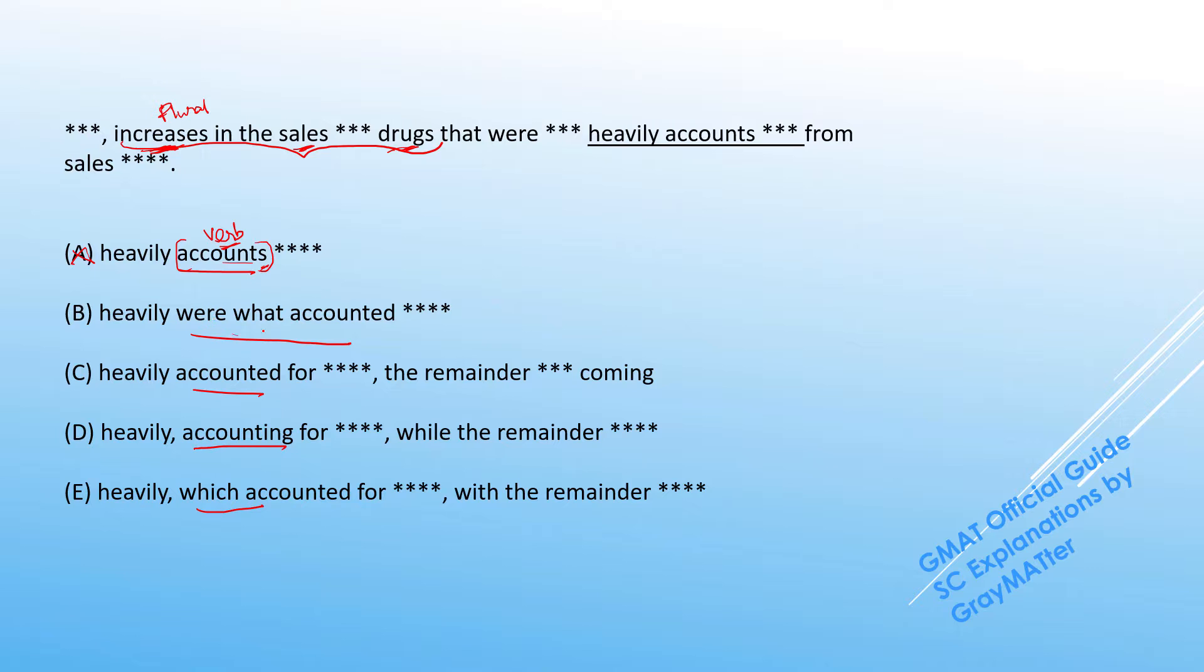Now B reads 'were what accounted,' and C just says 'heavily accounted.' Now compare these two answer choices, and you will begin to realize that these two words 'were what' are actually just unnecessary words because even if you take them out of the equation, the sentence will just read that the increases heavily accounted.